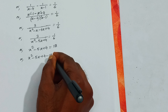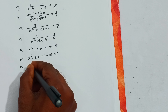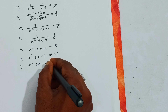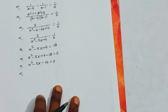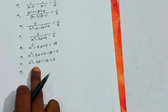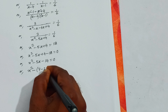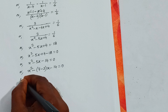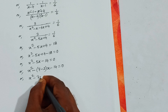Now the middle terms cancel: minus 1/(x-3) plus 1/(x-3) cancels, minus 1/(x-2) plus 1/(x-2) cancels. Two terms cancel each other. What remains is: 1/(x-4) minus 1/(x-1) = 1/6.